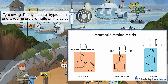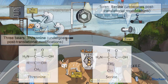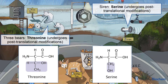As we discussed earlier, tyrosine can be made from phenylalanine. It's a precursor to melanin, thyroxine, and the catecholamines dopamine, norepinephrine, and epinephrine. The siren and three bears represent serine and threonine, respectively. Serine and threonine undergo post-translational modification like the addition of O-oligosaccharides in the Golgi apparatus, which is necessary for cell trafficking.